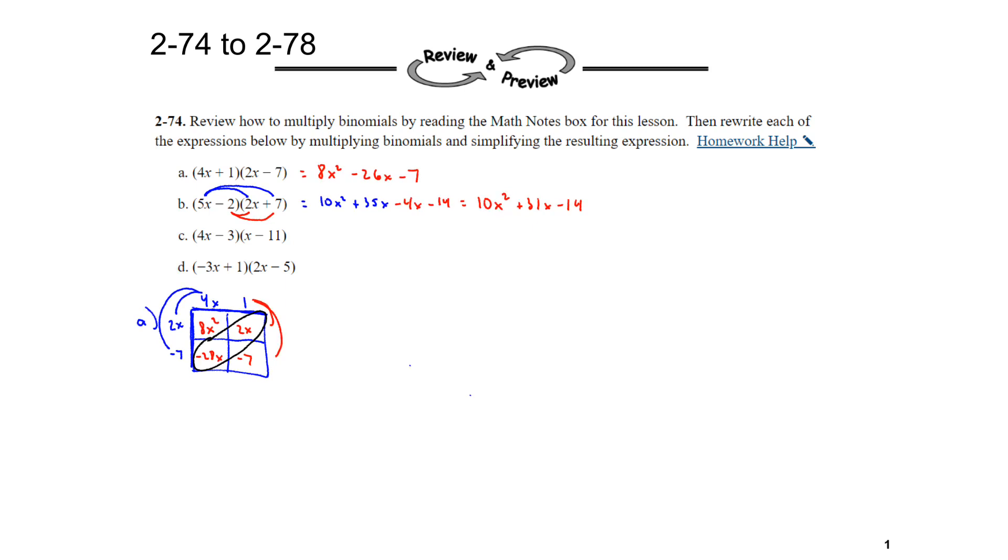So it would be 10x squared plus 31x minus 14. So once again, either method is perfectly fine. It's just a matter of preference. I'll use the area model again. So for this one, we have 4x minus 3 and x minus 11.